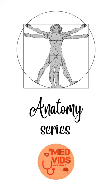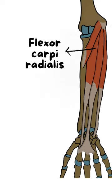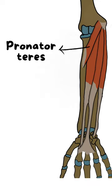Today in the anatomy series we are going to talk about the flexor carpi radialis muscle, which is medial to the pronator teres muscle. We talked about pronator teres in our last video.